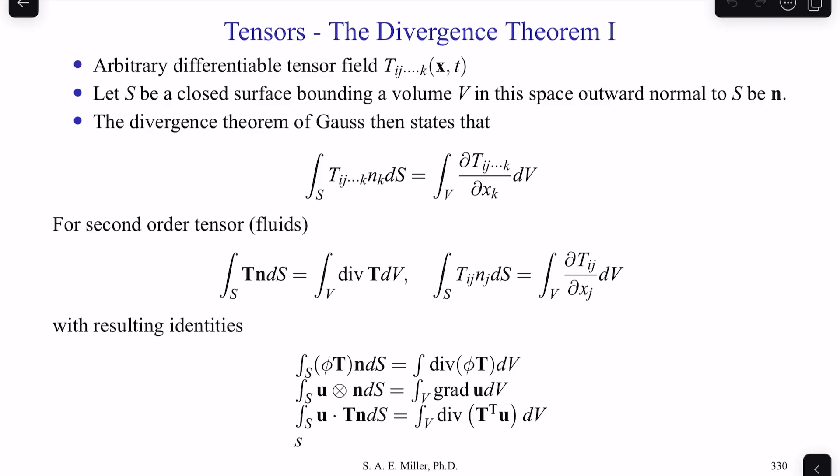For second-order tensors, which are most relevant in fluid dynamics, this can be written as the surface integral ∫_S T·n dS equals the volume integral ∫_V div T dV. In index notation, that's ∫_S T_ij n_j dS = ∫_V ∂T_ij/∂x_j dV.